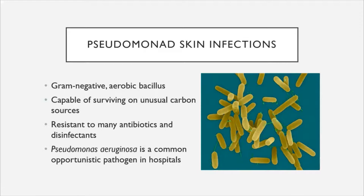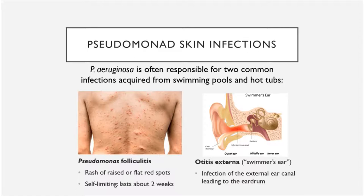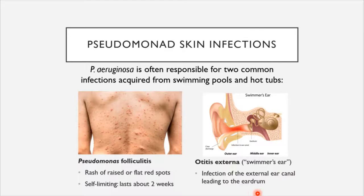Before discussing its role in nosocomial infections, Pseudomonas aeruginosa is also often responsible for two common infections acquired from swimming pools and hot tubs. One is Pseudomonas folliculitis, an infection of the hair follicles that results in a rash of raised or flattened red spots. This disease is not serious and is self-limiting, lasting about two weeks before resolving on its own. Otitis externa, also known as swimmer's ear, can occur when Pseudomonas aeruginosa invades the external ear canal leading up to the eardrum. Pseudomonas is not the only cause of otitis externa, but it is one of the more common ones.